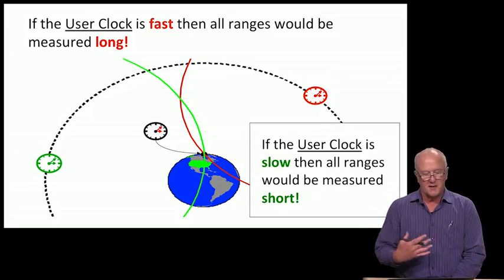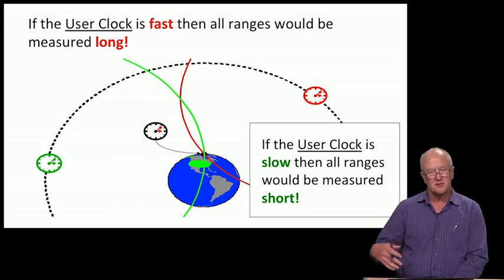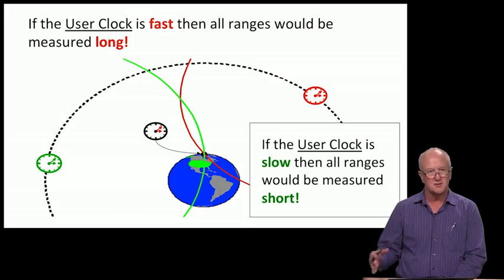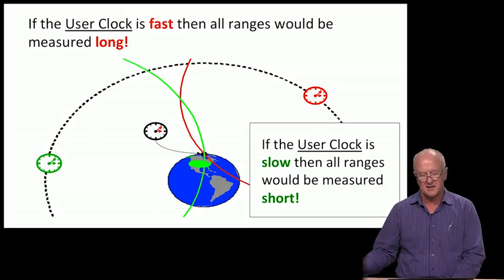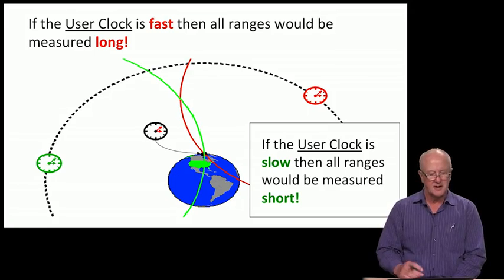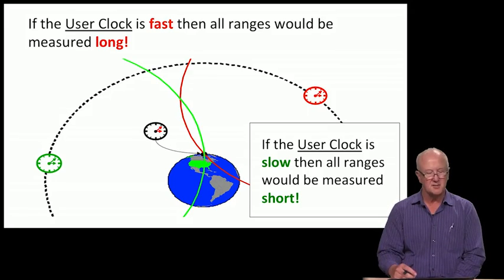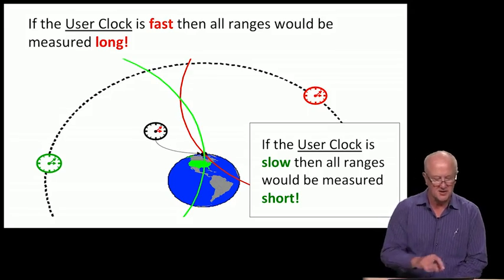If it were the other way around, if the user clock is slow—measuring 12:00 and 45 seconds—then all the ranges would appear short. As we seek the intersection between those two ranges, we would be getting large errors in our estimated position. That's the challenge.